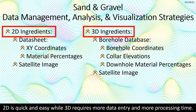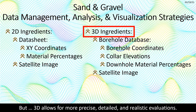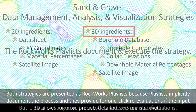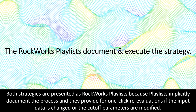2D is quick and easy, while 3D requires more data entry and more processing time. But 3D allows for more precise, detailed, and realistic evaluations. Both strategies are presented as Rockworks playlists because playlists implicitly document the process and they provide for one-click re-evaluations if the input data is changed or the cutoff parameters are modified.